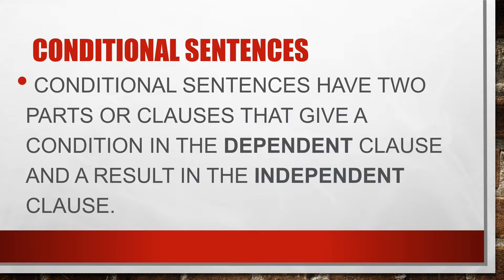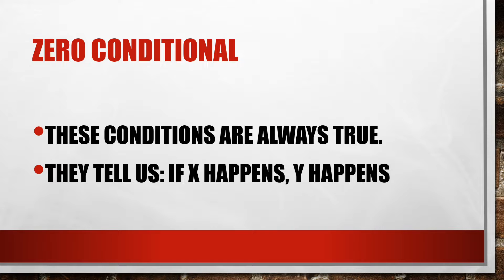Conditional sentences have two parts or two clauses that give a condition in the dependent clause and a result in the independent clause. So there are two clauses — one clause is dependent and the other clause is independent. The dependent clause gives us a condition and the independent clause gives us the result of that condition. And these conditions are always true in the case of zero conditional. They tell us if x happens, y happens.